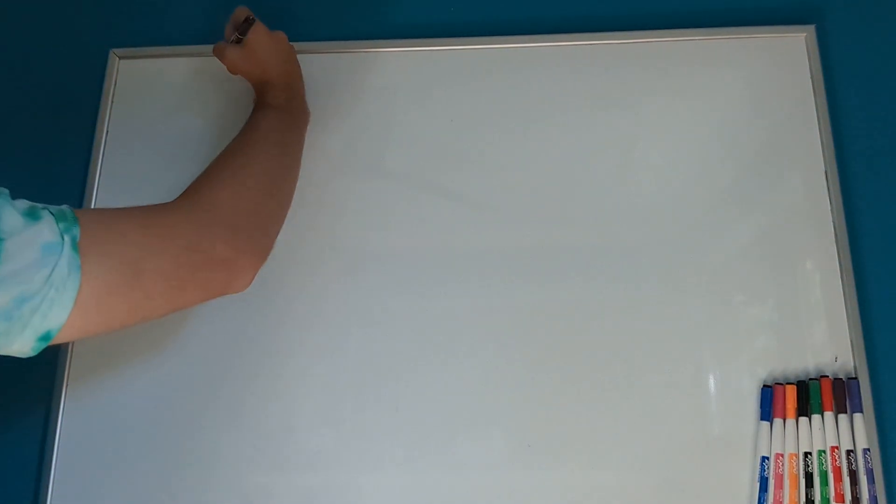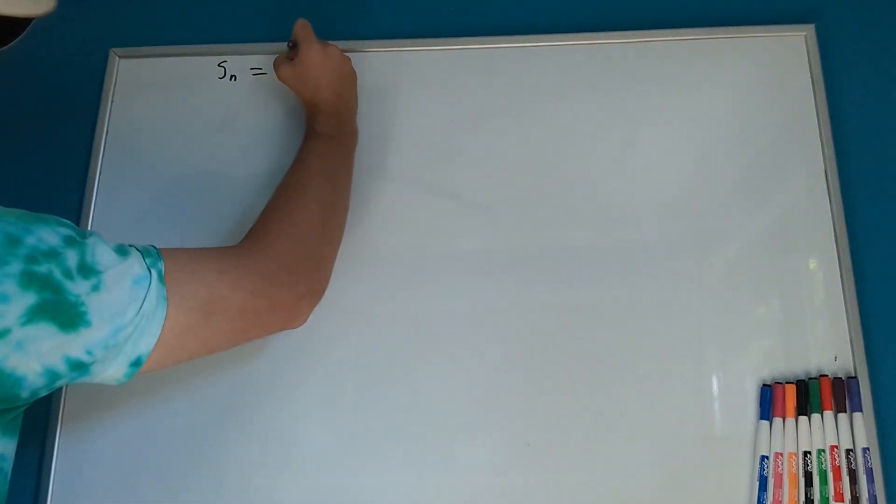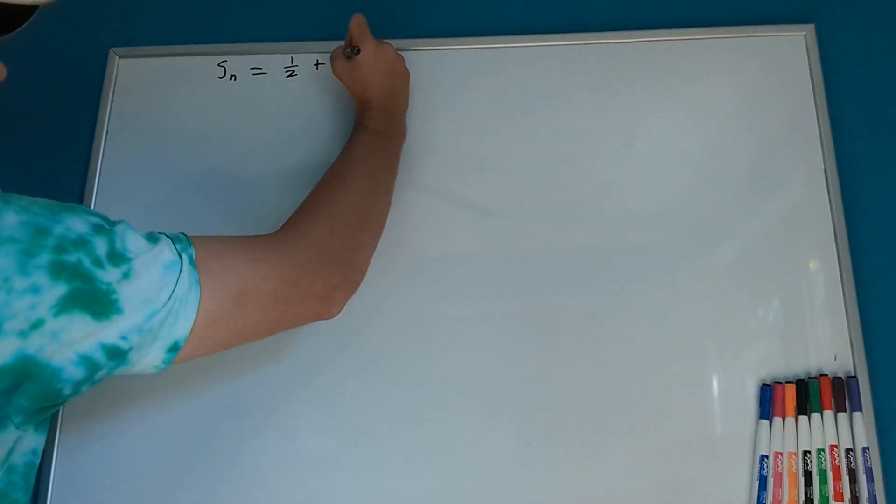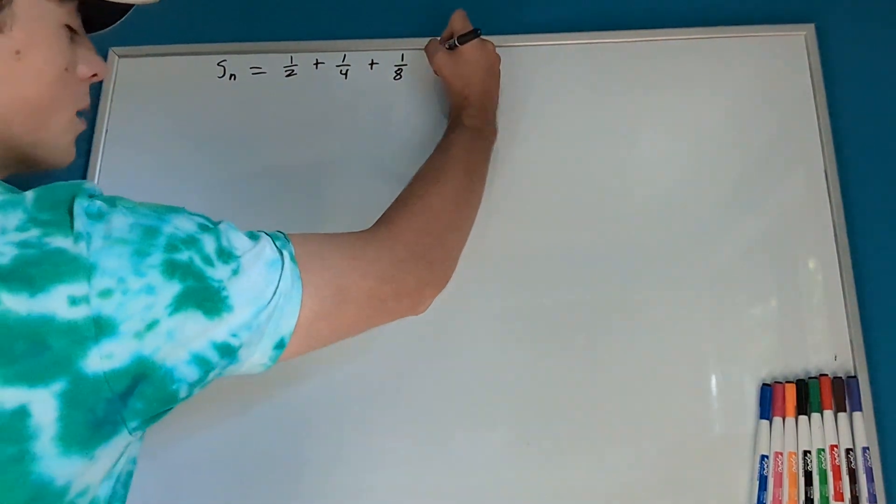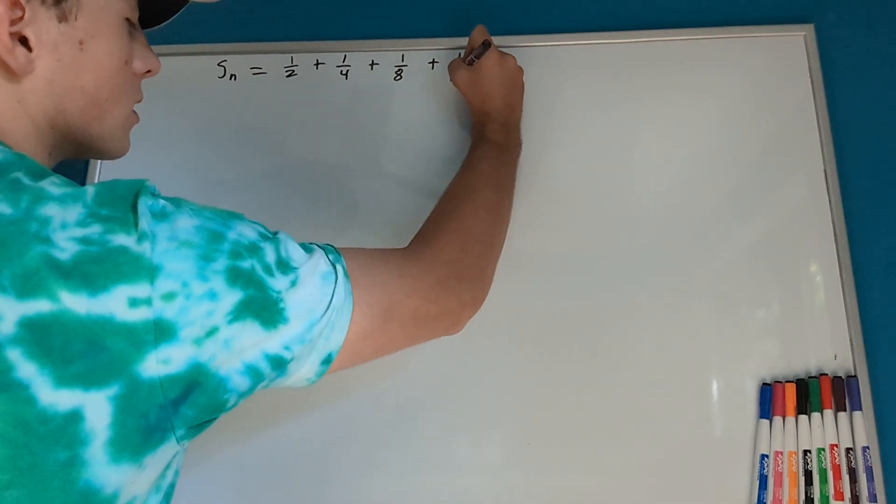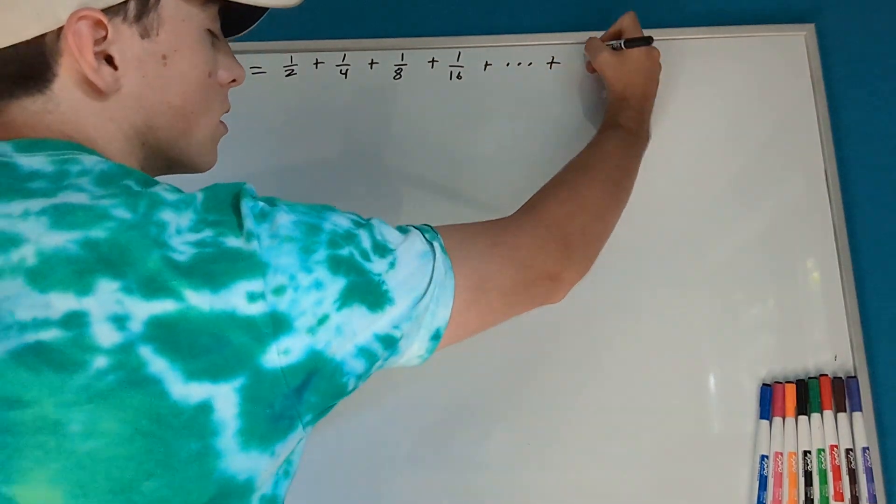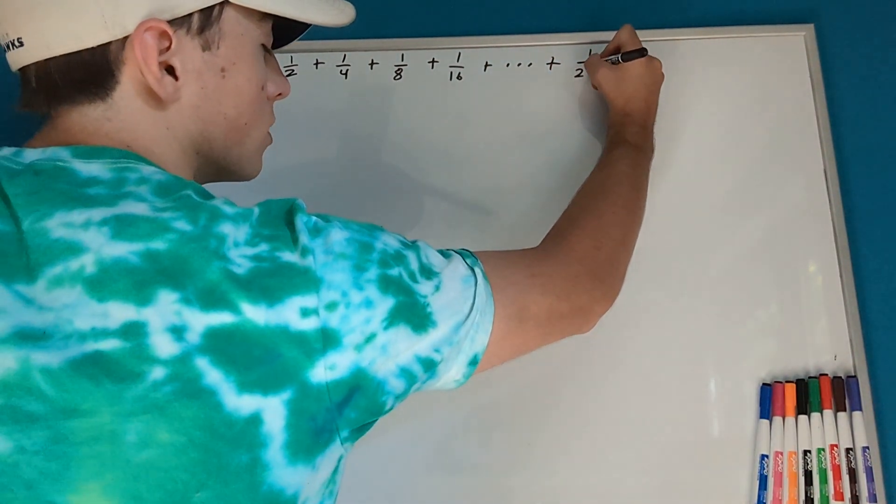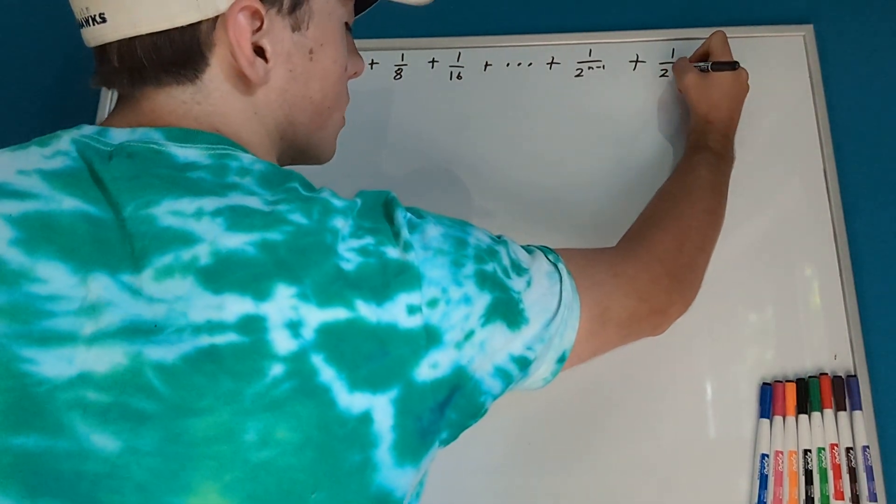So, today, what I want to show you is that if we have this series, where s_n equals 1/2 + 1/4 + 1/8 + 1/16 plus dot dot dot, plus 1 over 2 to the n minus 1 plus 1 over 2 to the n.